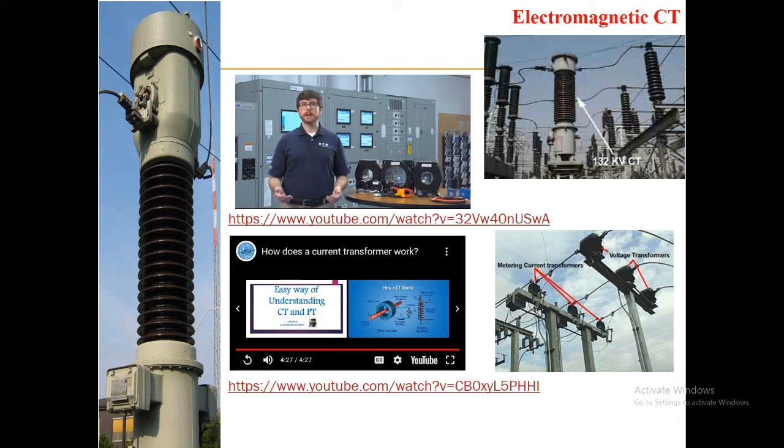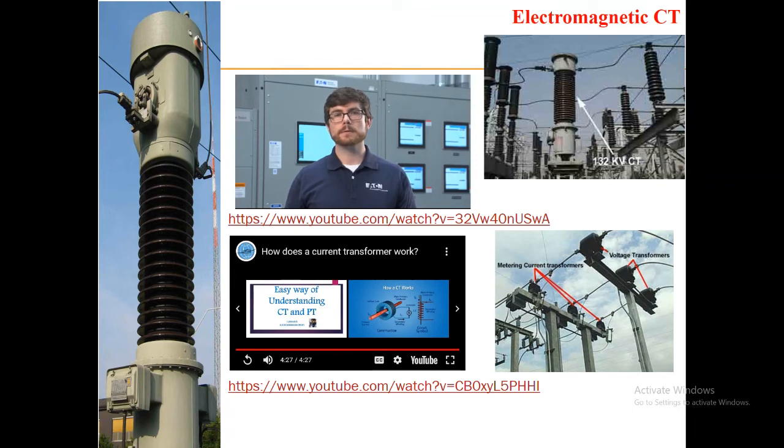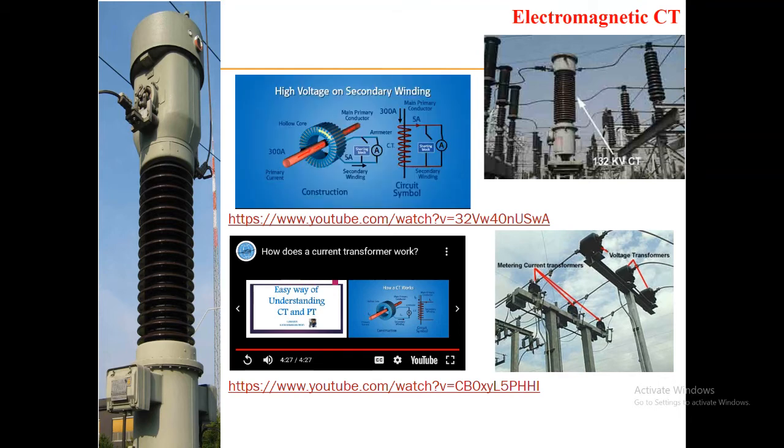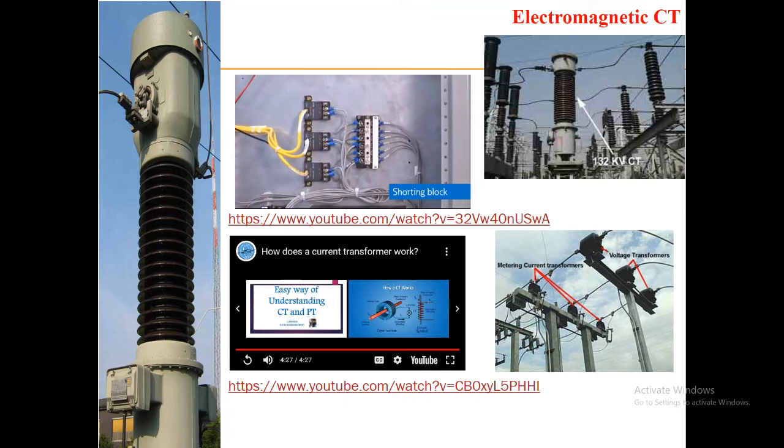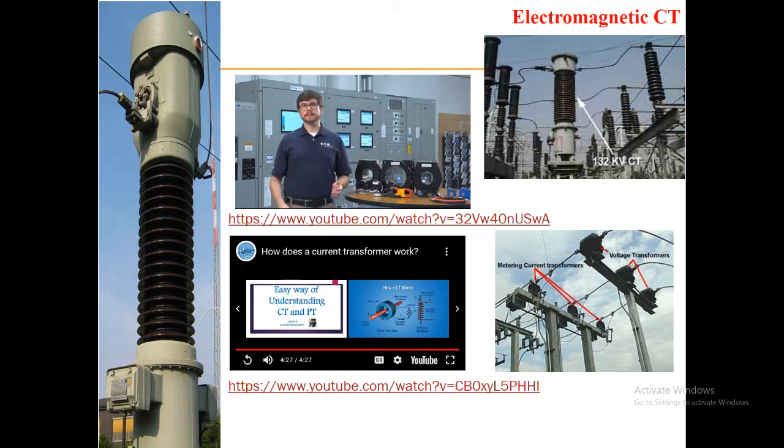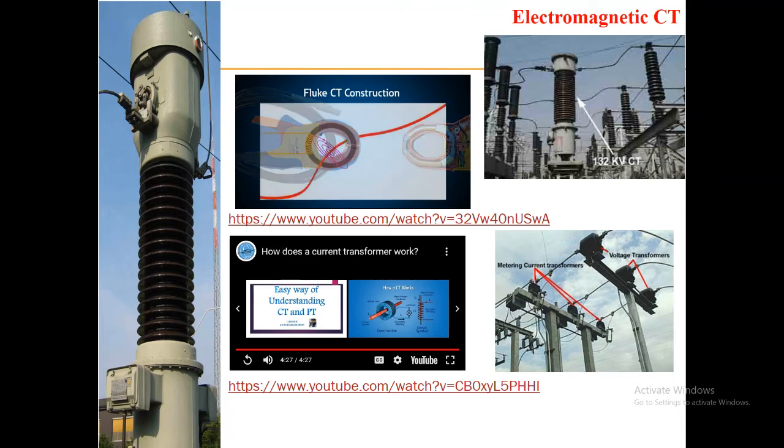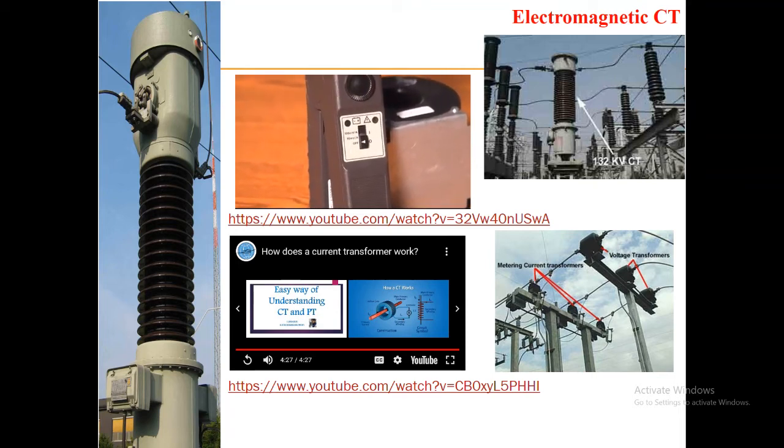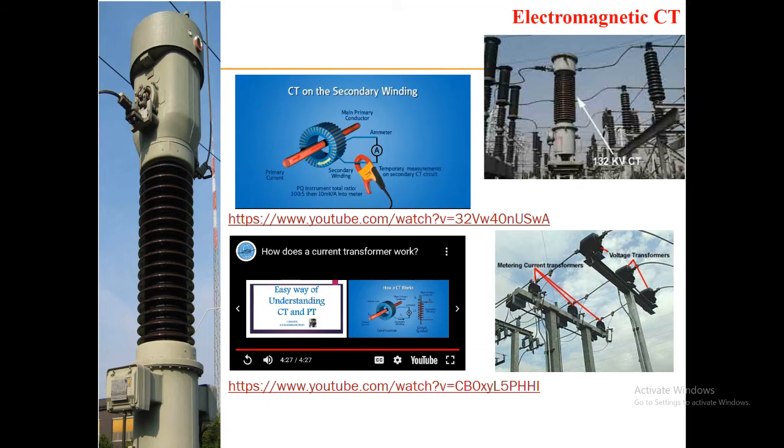Most CTs have a 5 amp output, but others have 1 amp, so when interfacing with a meter or circuit breaker, the correct multiplier must be used that will convert the 5 amp or 1 amp to the actual measured value. But even though the current steps down 300 amps to 5 amps, the voltage will step up on the secondary winding. An open circuit on the CT secondary winding can have dangerously high voltage of thousands of volts. When CTs aren't in use, they should always have their secondary winding shorted for safety by using a shorting block or a temporary jumper.